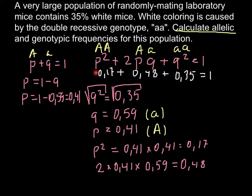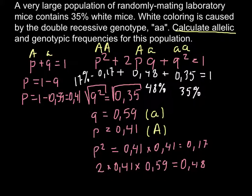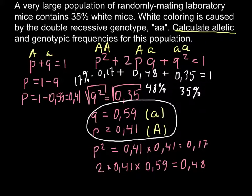We can also express these numbers as percentages by multiplying by 100 or moving the comma two places to the right: 35% (homozygous recessive), 48% (heterozygous), and 17% (homozygous dominant). Here we have our answers for allelic frequencies and genotypic frequencies.